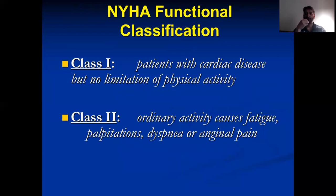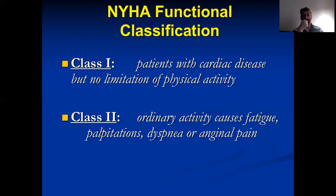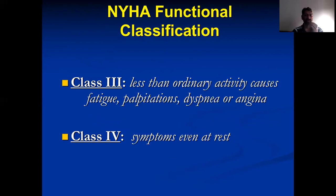After understanding the pathophysiology and rationale for treatment in heart failure, it is very important to assess your patient's functional class. It has a lot of impact on management strategy, on adding or subtracting drugs, and seeing whether your patient is improving, deteriorating, or static on treatment. Class 1: patient with cardiac disease but no limitation of physical activity — no symptoms on routine activity. Class 2: ordinary activity causes fatigue, palpitation, dyspnea, or anginal pain. Class 3: less than ordinary activity causes those symptoms. Class 4: symptoms at rest.